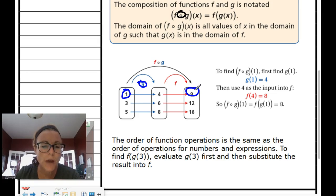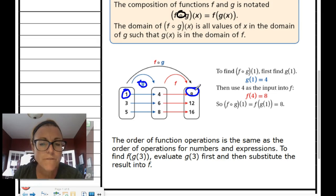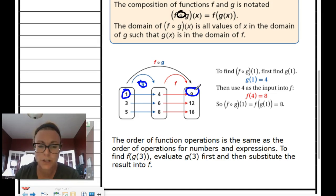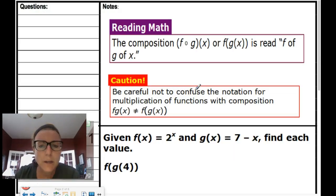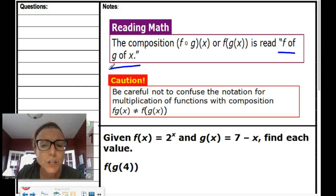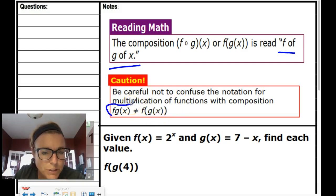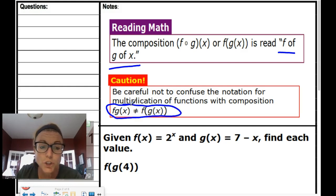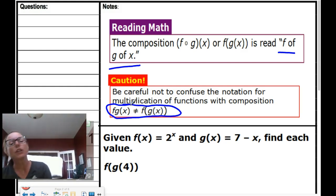The order of function operations is the same as the order of operations for numbers and expressions. To find f of g of 3, evaluate g of 3 first, then use that output as the input into f. Be careful not to confuse notation for multiplication of functions with composition — f times g of x is not the same as the composition of f and g of x. They are different.